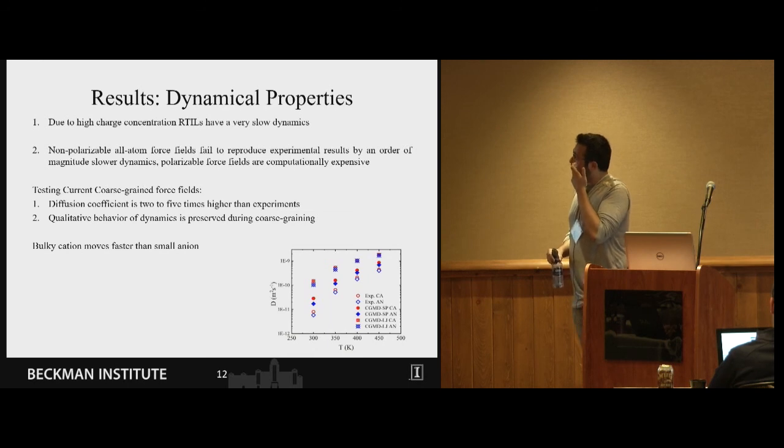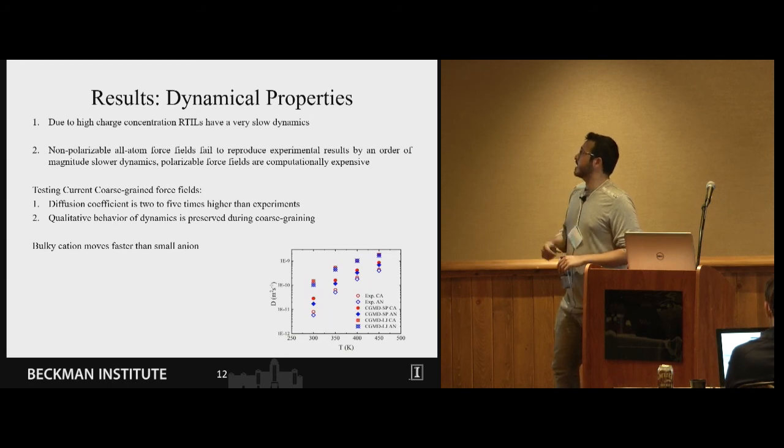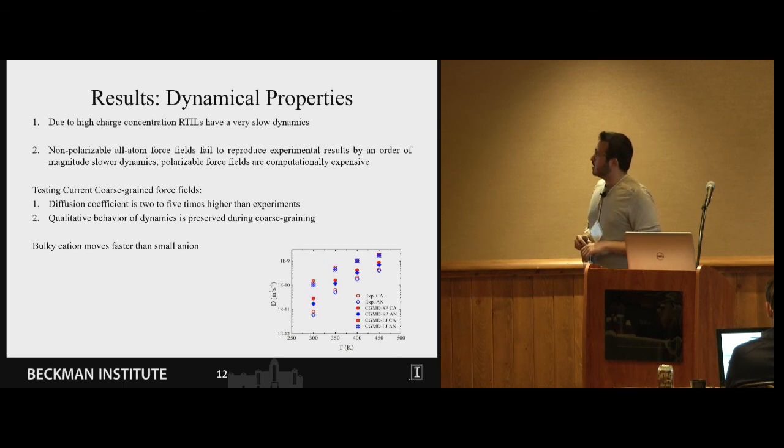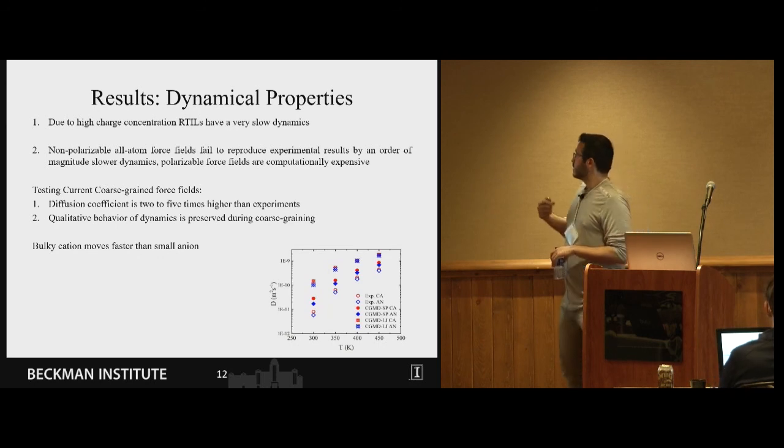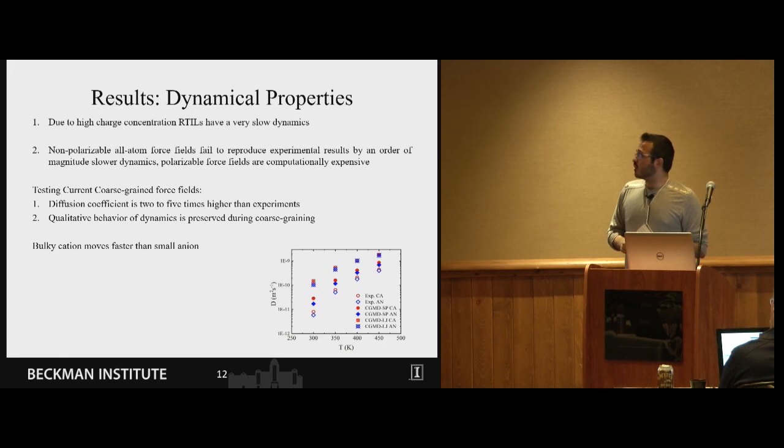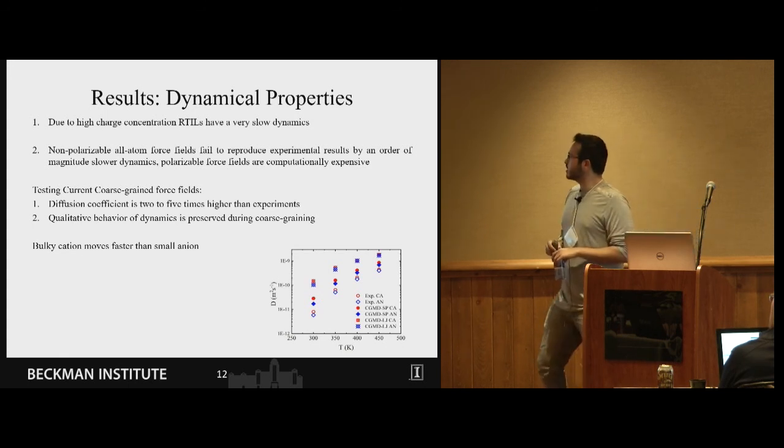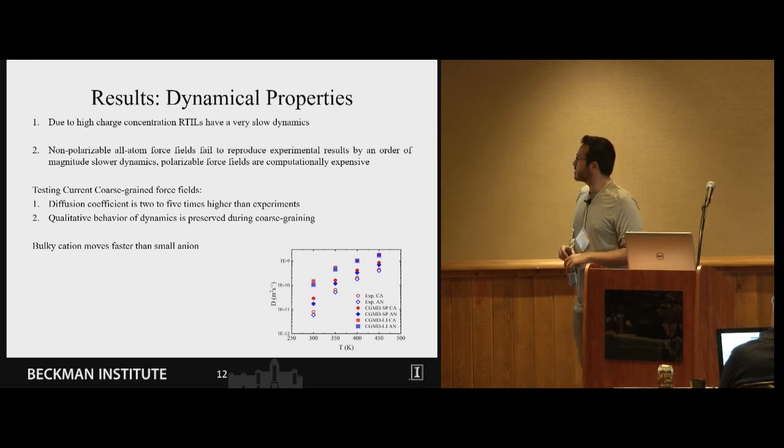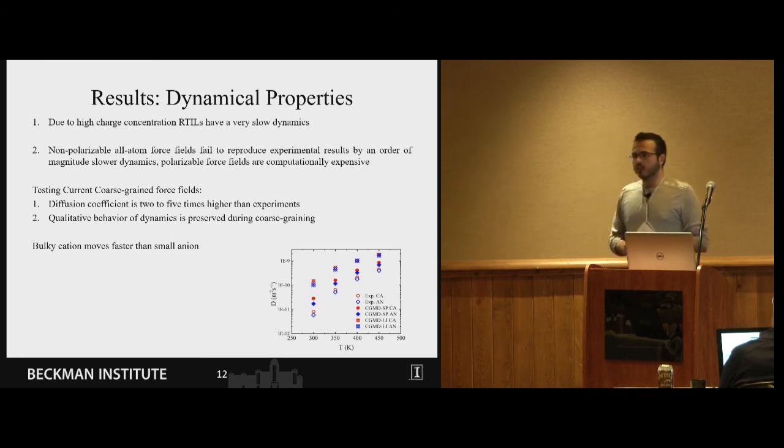One of the important properties of ionic liquid is their slow dynamics and there are many studies going on about them. As their structure which I showed is very heterogeneous, their dynamics is also heterogeneous. But there is a very hard time obtaining all atom force field which can reproduce experimental results. Non-polarizable force fields reproduce diffusion coefficient but by an order of magnitude less because of their high charge concentration. Polarizable force fields can reproduce it but they are computationally really expensive so people usually don't use them in their studies.